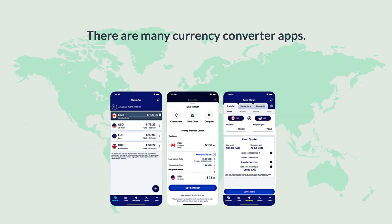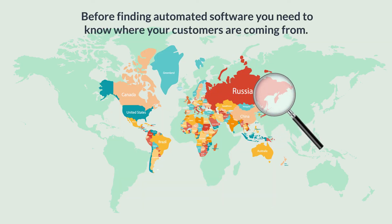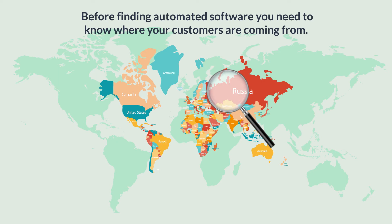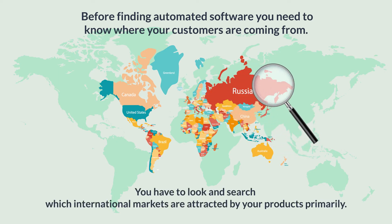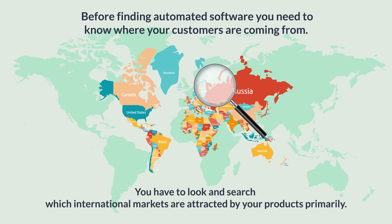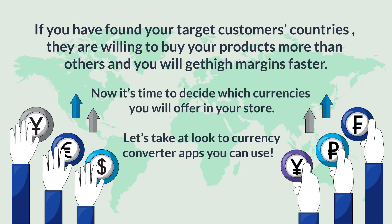These automated tools are ready to work with you, but before finding automated software, you need to know where your customers are coming from. You have to look and search which international markets are primarily attracted by your products. If you have found your target customers' countries — the ones willing to buy your products more than others — you will get higher margins faster. Now it's time to decide which currencies you will offer in your store. Let's take a look at currency converter apps you can use.